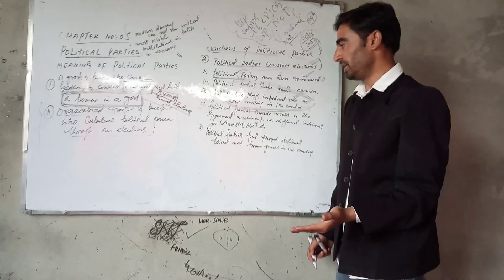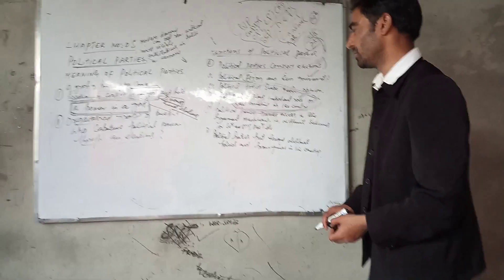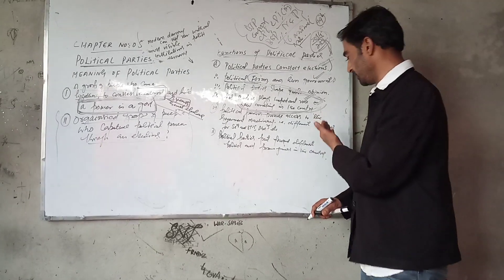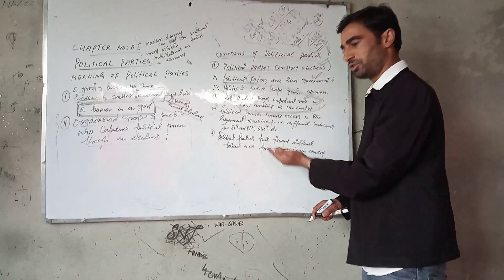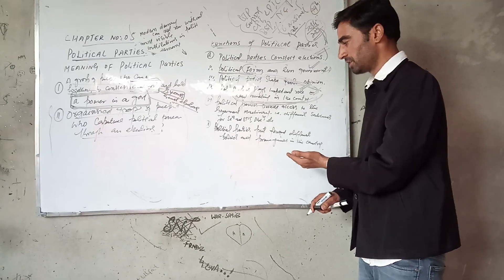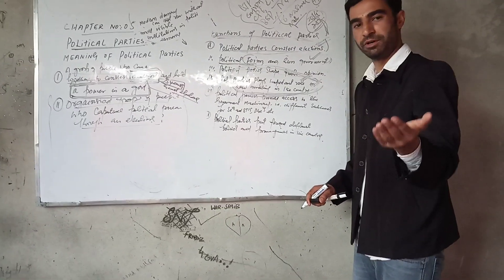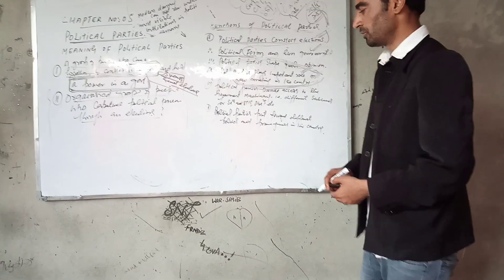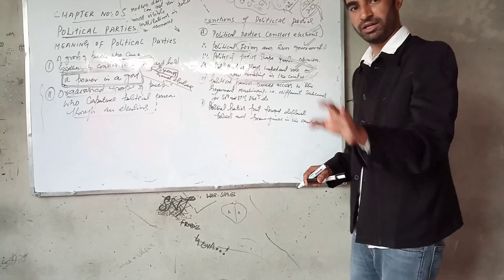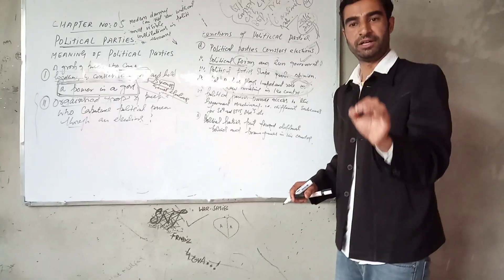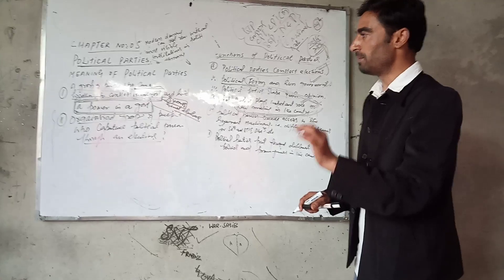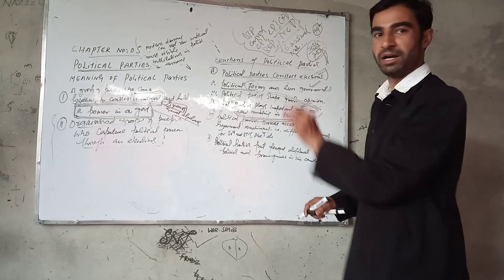Political parties provide access to government machinery and make different schemes to be launched across India and in the states. Each and every party has a different ideology, different policies, and different programs. Parties are the most visible institutions of a democracy.